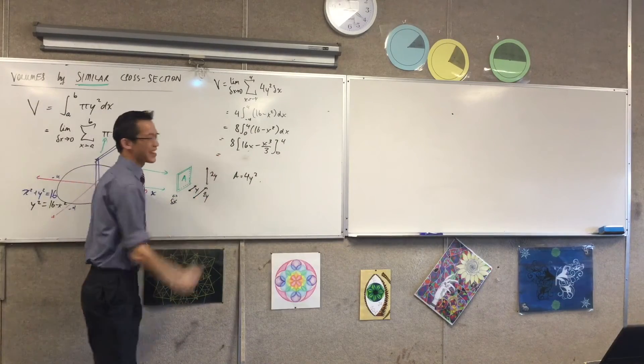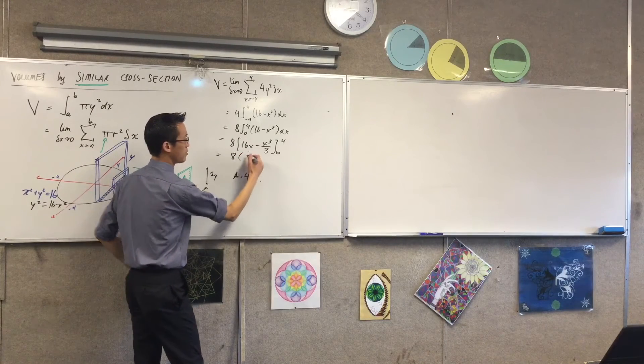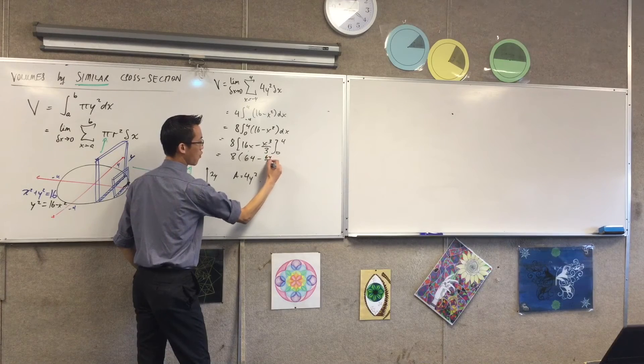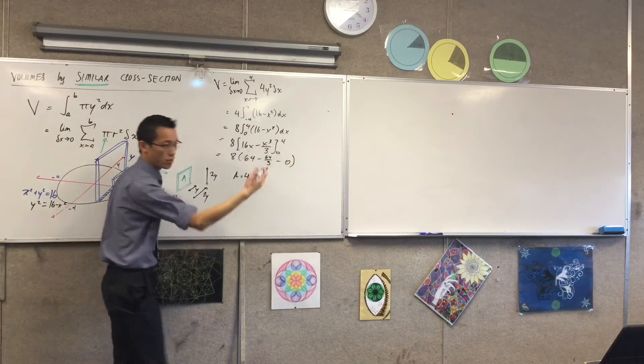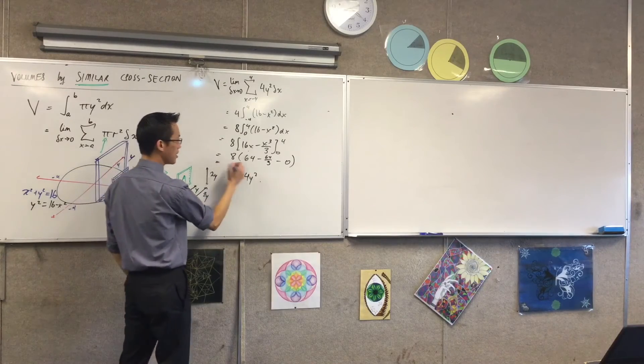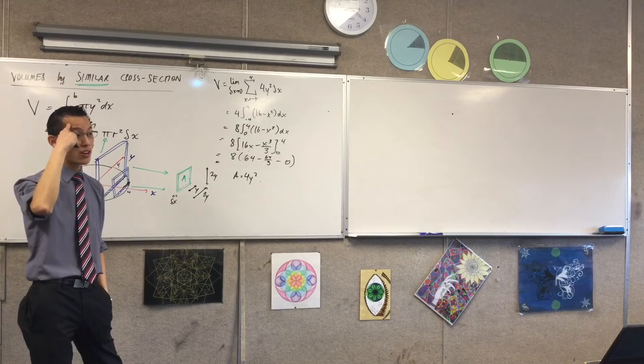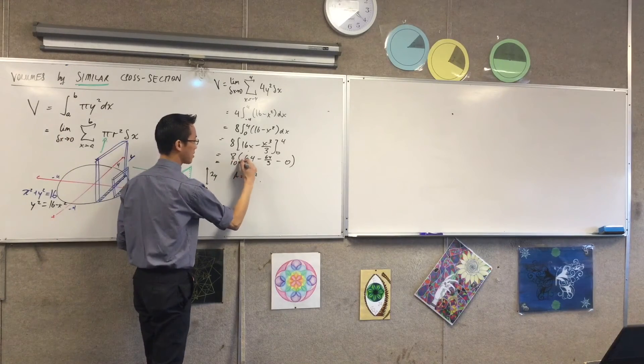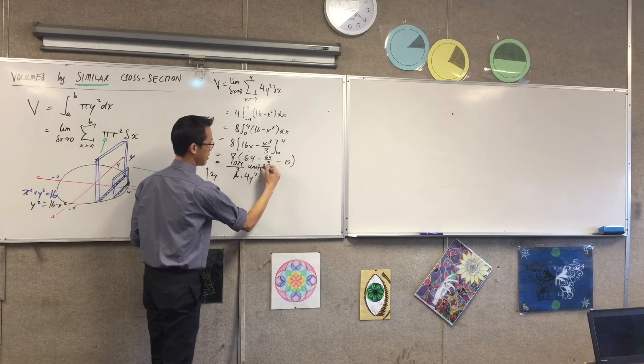Now, when I evaluate this guy, this is very simple. You've got your 8 out the front. This looks to me like 64 take away 64 on 3 take away 0 take away 0, which is 128 on 3 times 8, which I believe is 1024 on 3 and it's a volume.